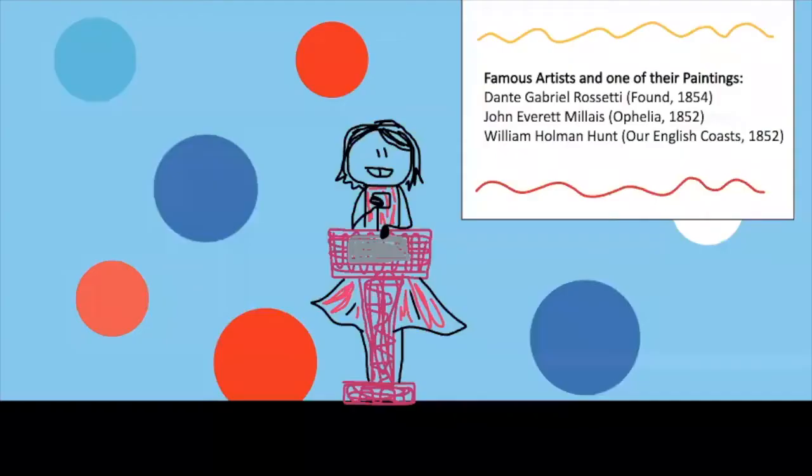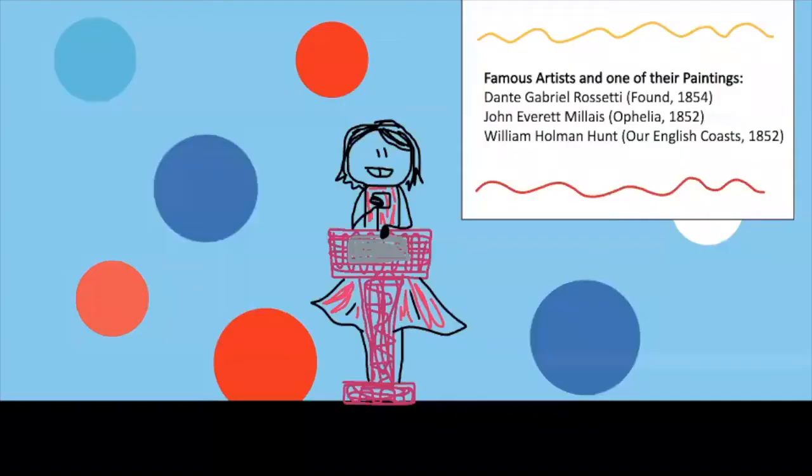The next art period is Pre-Raphaelite, from 1848 to 1854. Although this era happened hundreds of years after Raphael was alive, it has this name because the artists of this era drew inspiration for their art from before the time of Raphael. Found is a painting from the Pre-Raphaelite era.